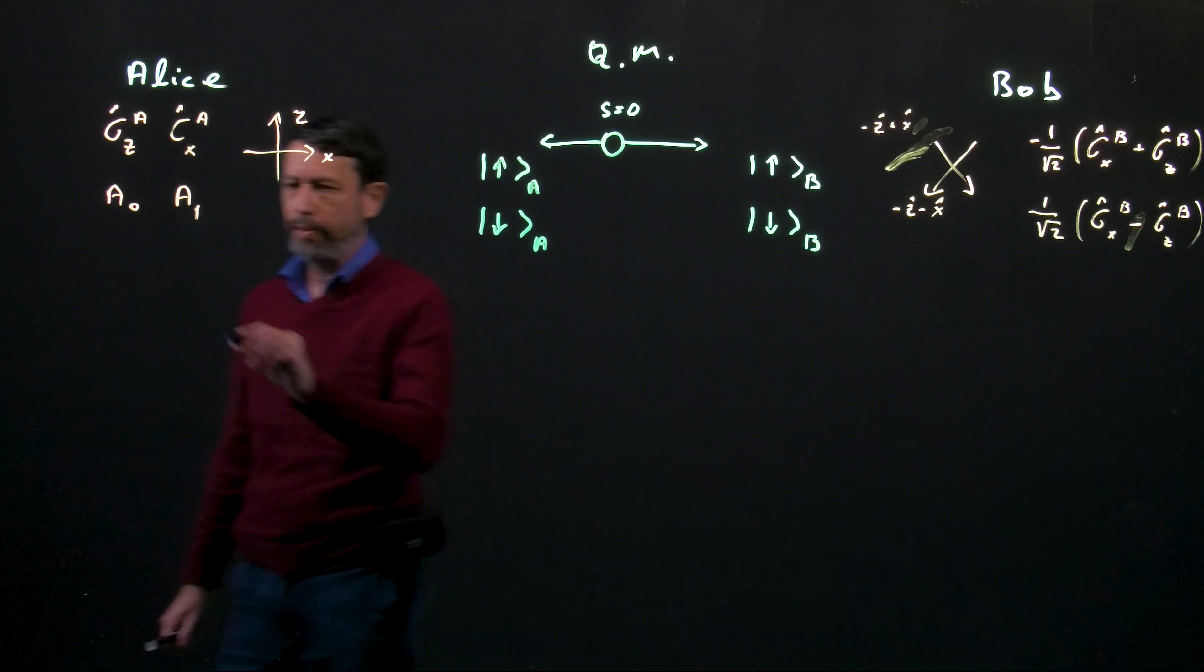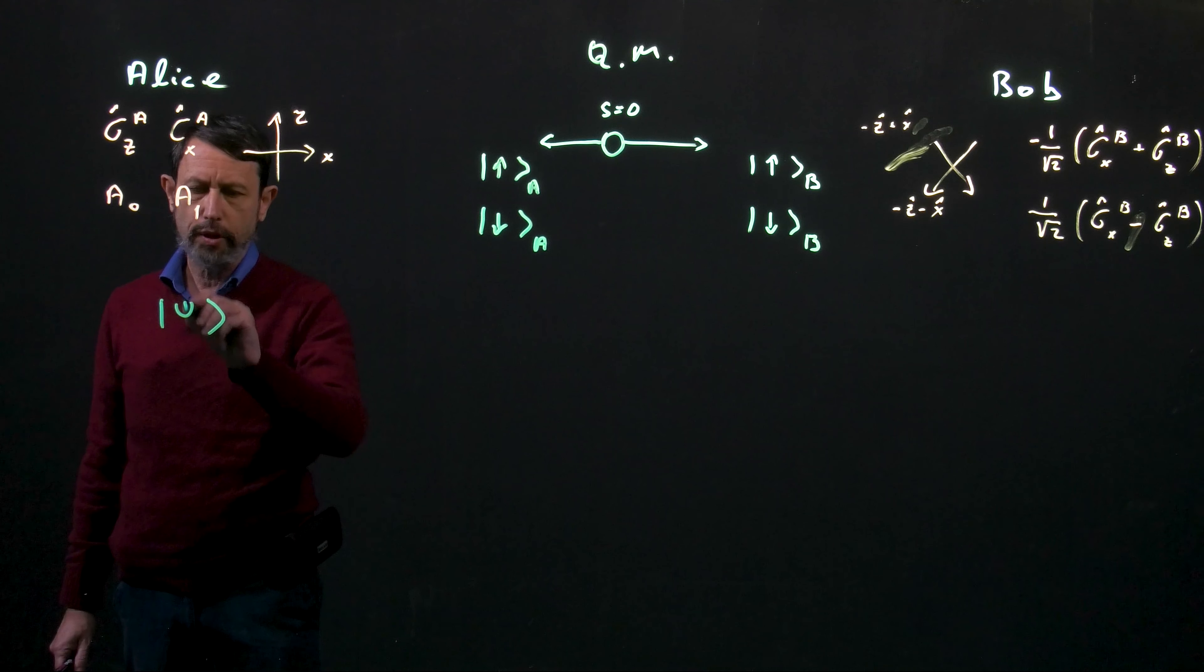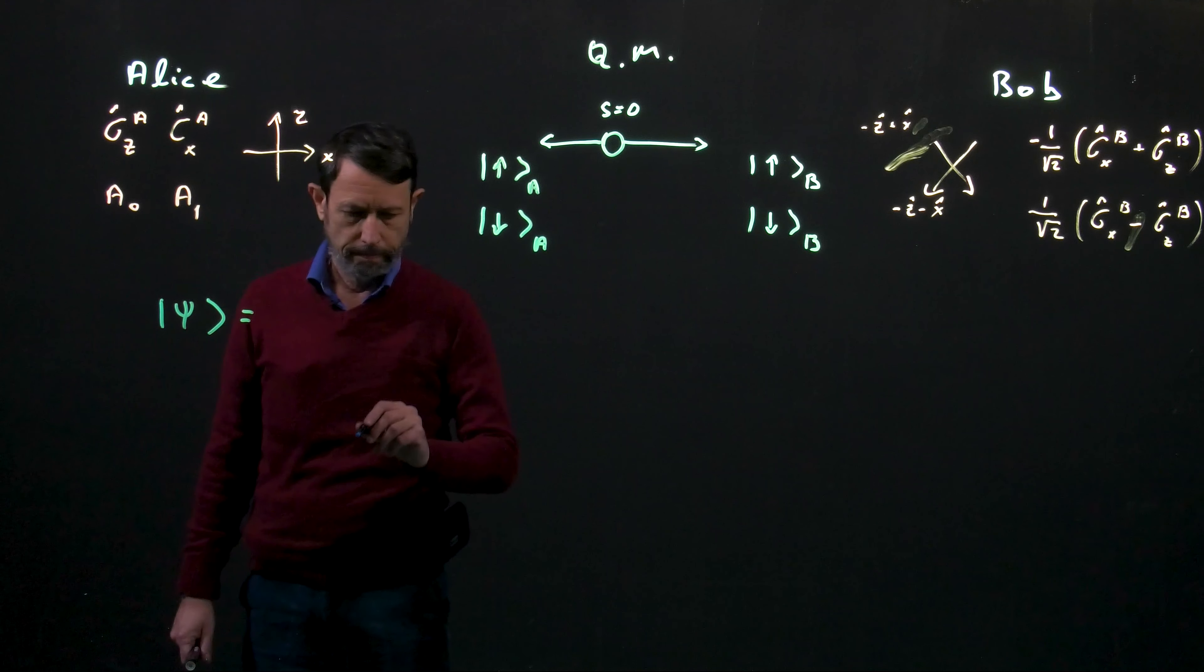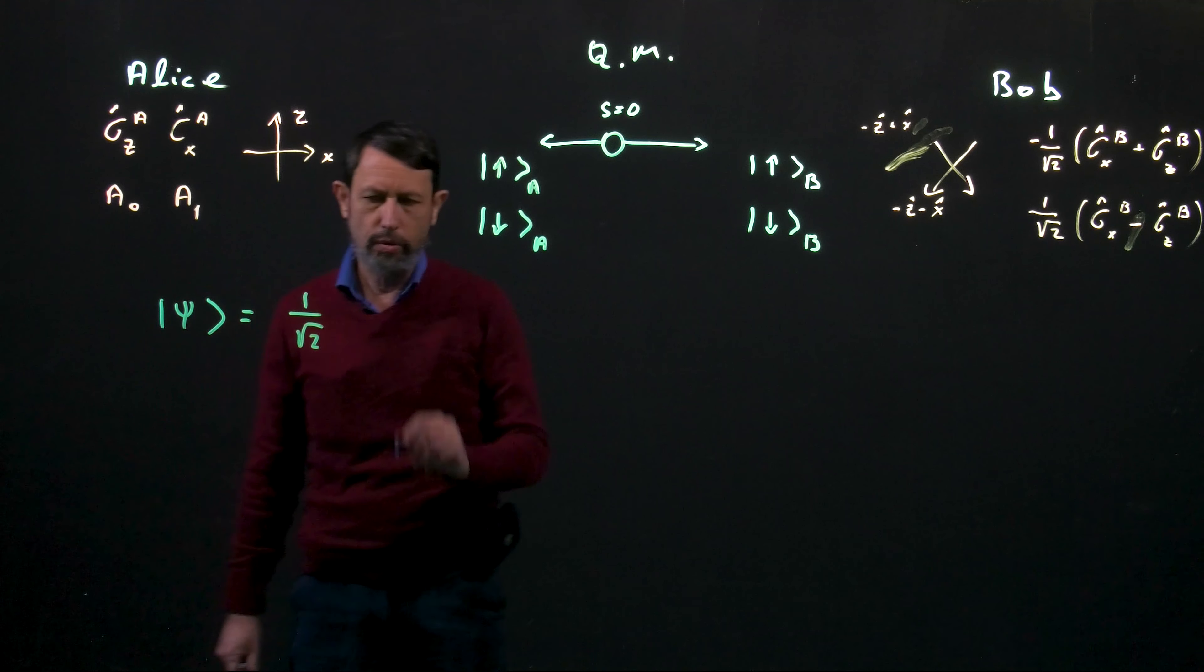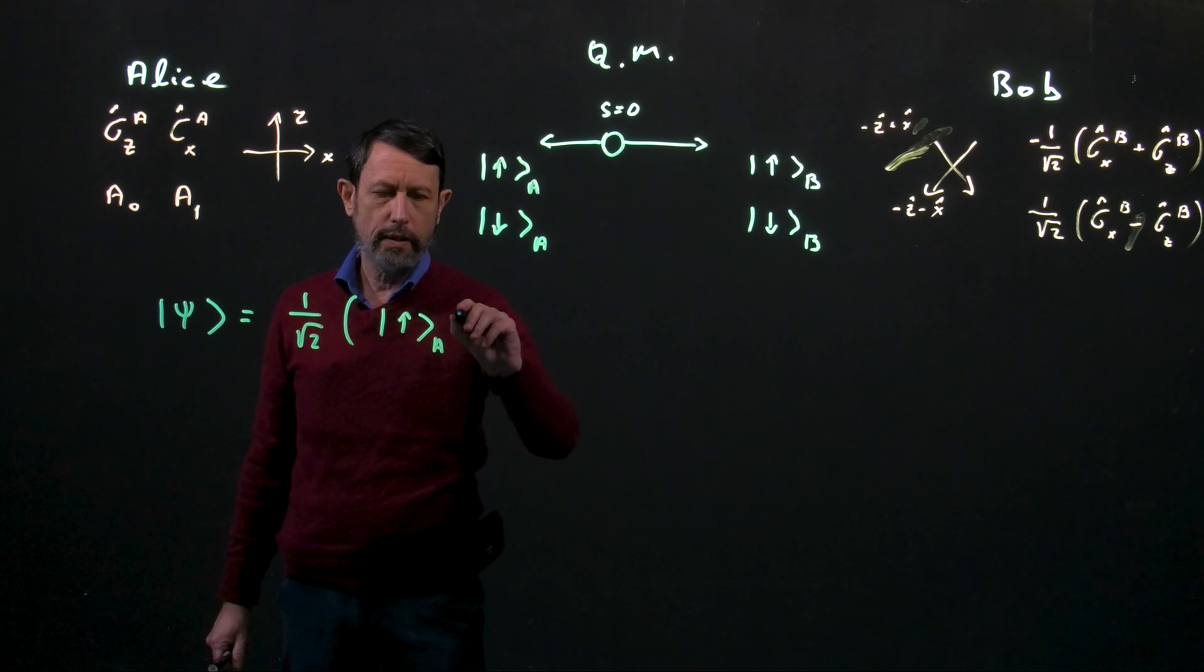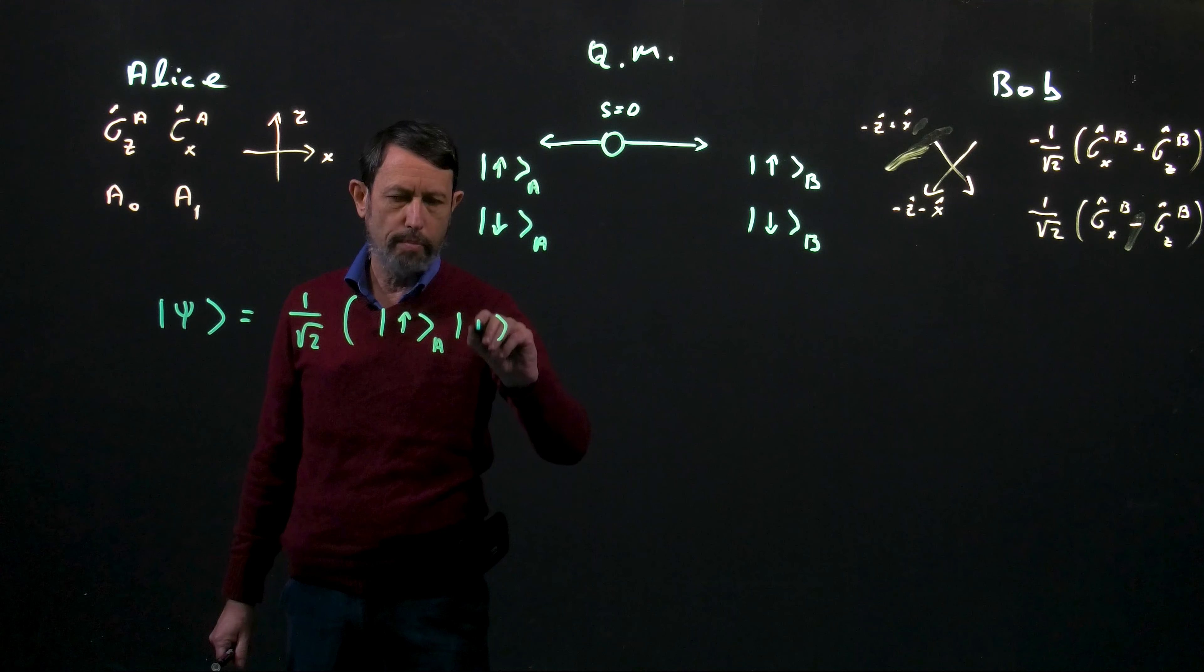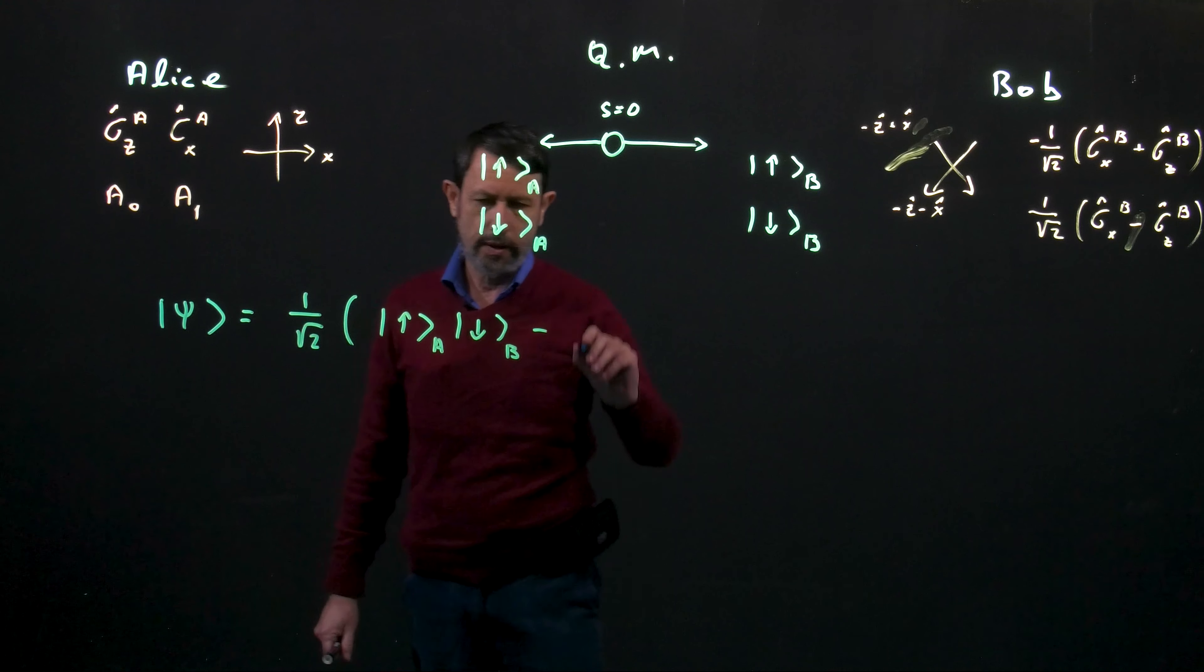So in this case it's very easy to write down the wave function. The wave function is simply the combination of both possibilities. So one over square root two for normalization.